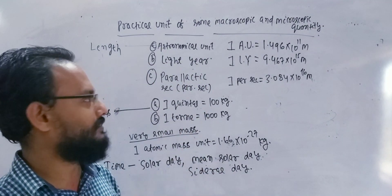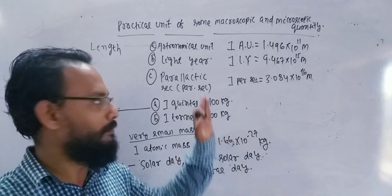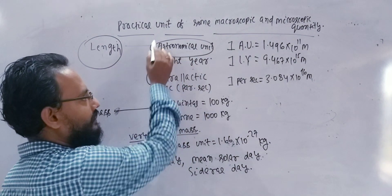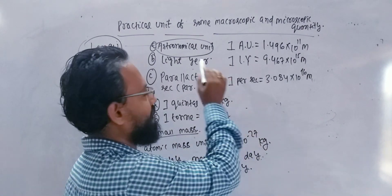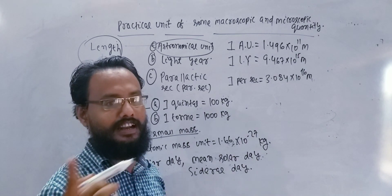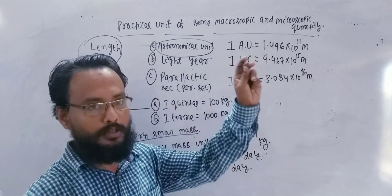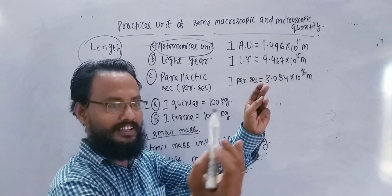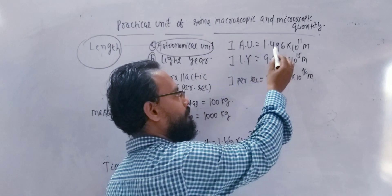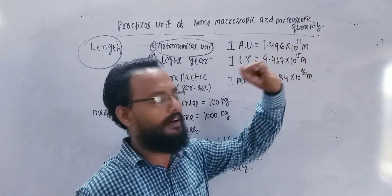Macroscopic means the main distance between sun and earth. The mean distance between the sun and earth — how much astronomical? The distance will change, so the mean distance is the astronomical unit. One astronomical unit is 1.496 into 10 to the power 11 meter.